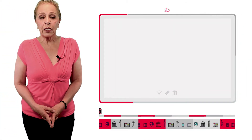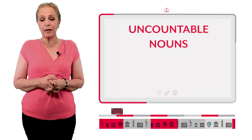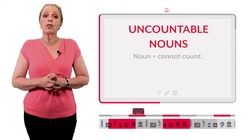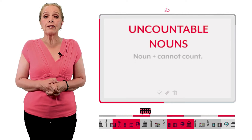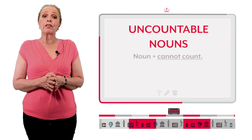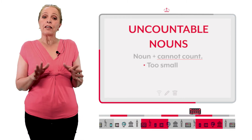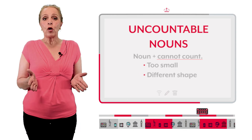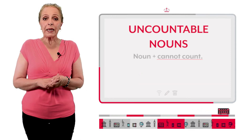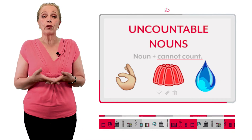Now we are going to talk about the uncountable nouns. Ahora, vamos a hablar de los sustantivos incontables. Those are the ones that we cannot count, because they are too small, or they have a different shape, or they are liquids. Porque son o muy pequeños, tienen una forma indeterminada, o son líquidos.